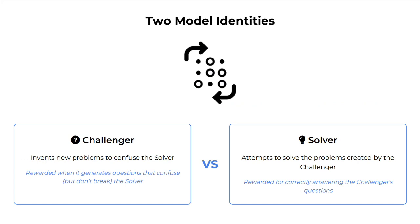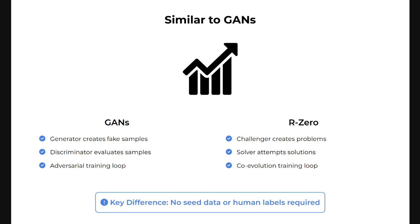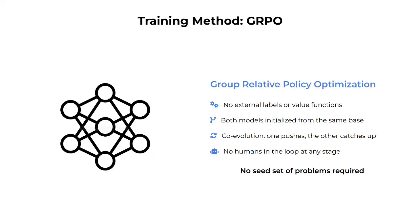There are two models involved in this framework. One is the Challenger, which invents new problems to confuse the Solver. It is rewarded when it generates questions that confuse the Solver but don't break it — the Solver should be able to answer sometimes but not always. The Solver attempts to solve the problems created by the Challenger and gets rewarded when it solves correctly. This is quite similar to GANs, where the generator creates fake samples and the discriminator evaluates which is fake and which is real. Here, the Challenger creates problems, the Solver attempts solutions, and a co-evolution training loop happens.